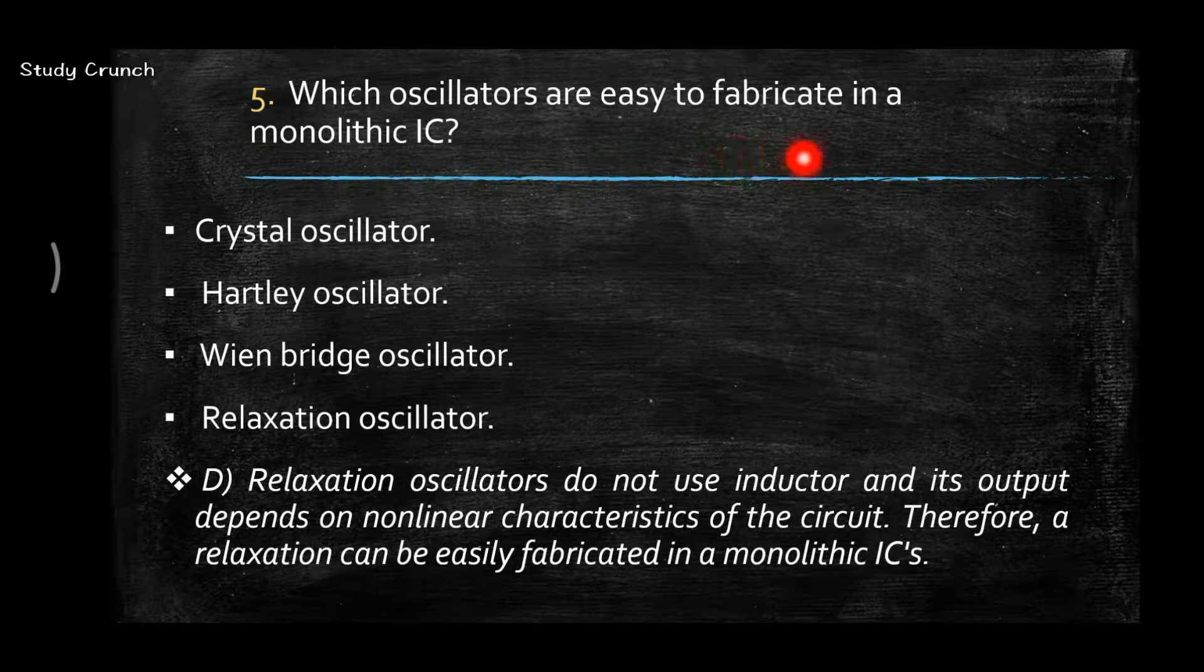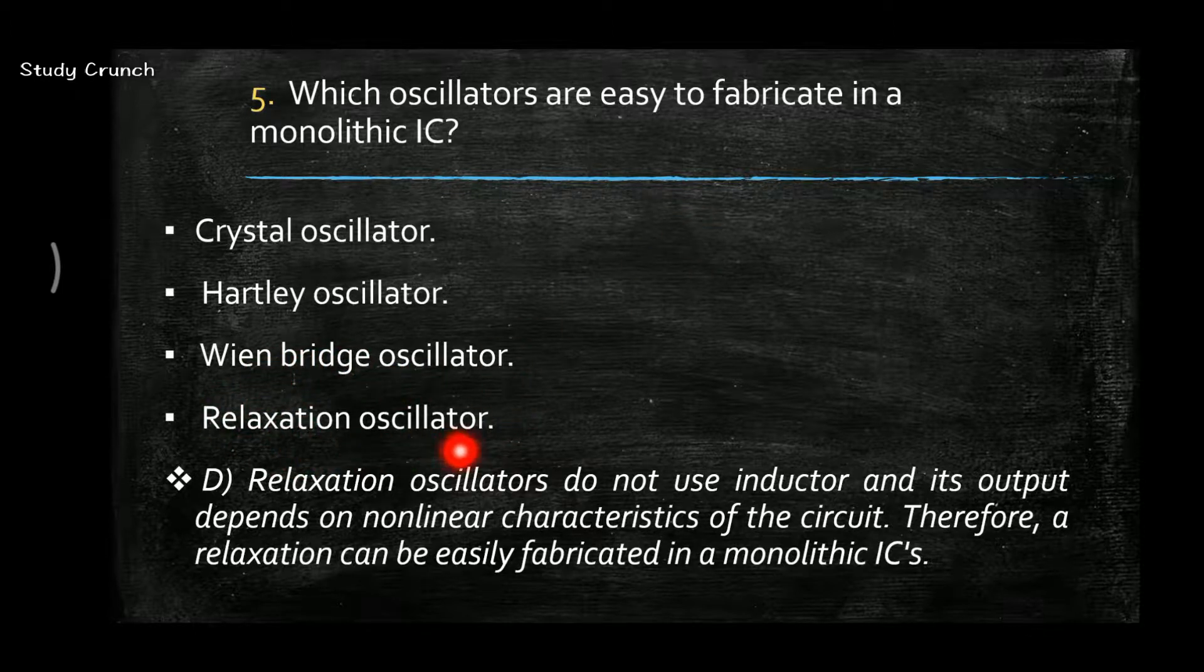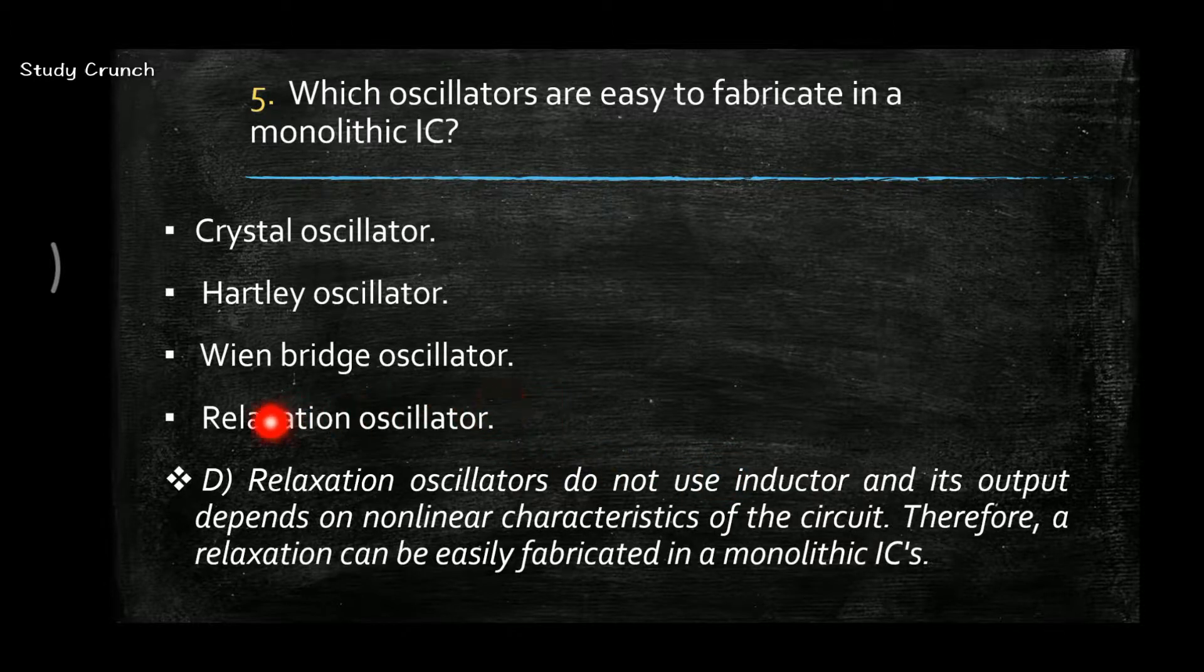Next, which oscillators are easy to fabricate in a monolithic IC? The answer is D, that is relaxation oscillator, because we do not use inductor and its output depends only on the nonlinear characteristic of the circuit.